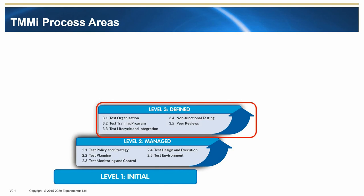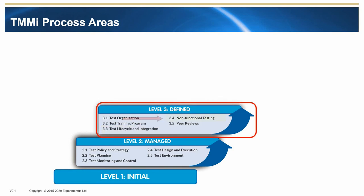At Level 3 there are also five process areas: Test Organisation, Test Training Program, Test Lifecycle and Integration, Non-Functional Testing, and Peer Reviews. Test Organisation looks for testing as a recognised profession with defined roles and career paths for testers. It also covers the provision of a centralised repository for test process documentation.